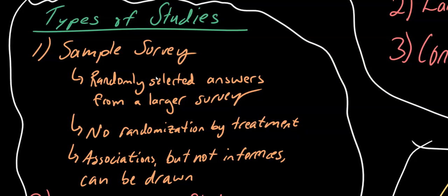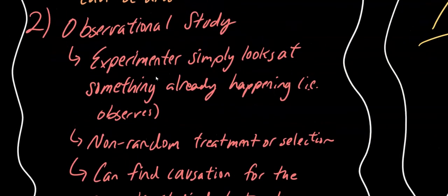In observational studies, we have a lot less work on the part of the experimenter, and they're often a lot more cost-effective. They simply look at something that's already happening and analyze the results of whatever that treatment might be, such as a non-random treatment and selection. From this, one could find causation but not a greater generalization because the results of this treatment only represent what is true in an observed population, not for the greater world population.